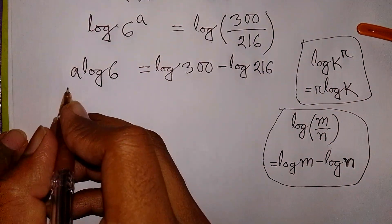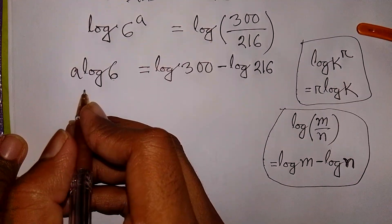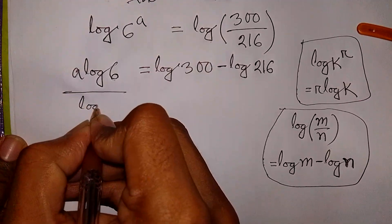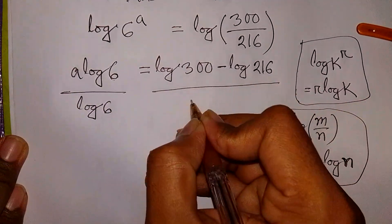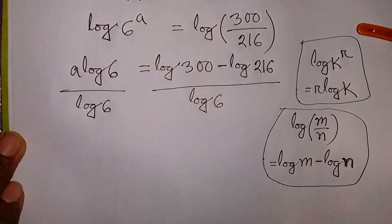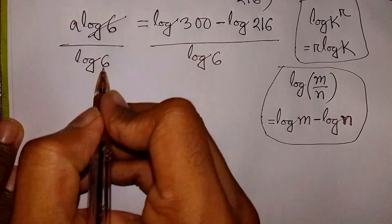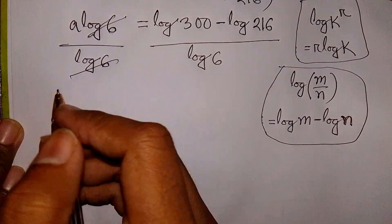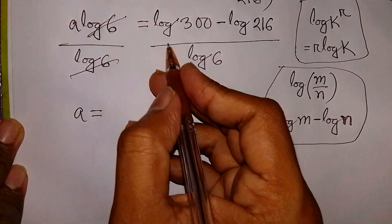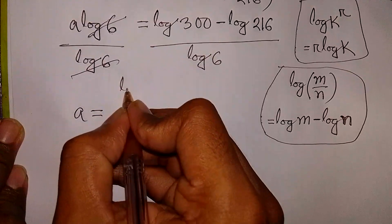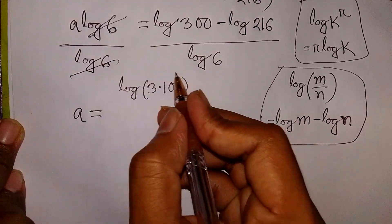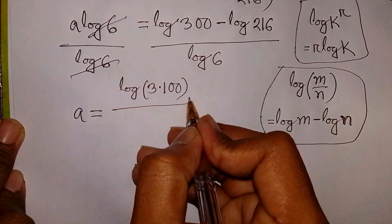Now we need the value of A, so we divide both sides by log 6. The log 6 terms cancel out, leaving A equal to log of 300 — which can be written as log of 3 times 100 — divided by log 6, minus log 216 divided by log 6.